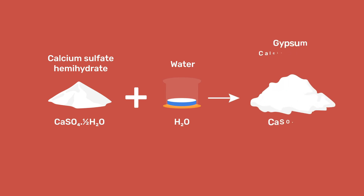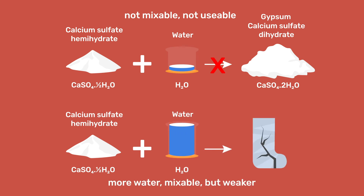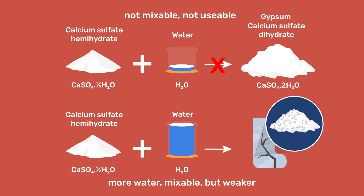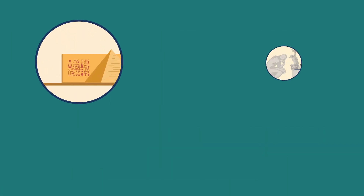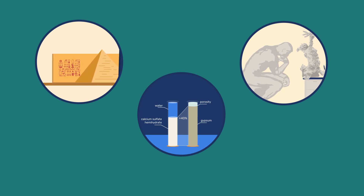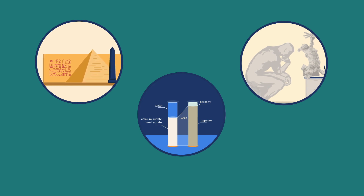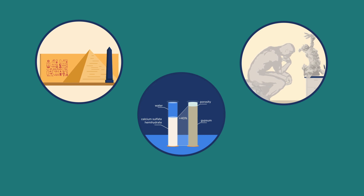The excess water has particularly negative effects on strength and durability. In short, by adding more water, the porosity increases and the strength decreases. In conclusion, the setting and hardening of gypsum is due to a chemical reaction, and not to drying, as is by contrast the case for earthen materials. This chemical reaction involves the coupling of gypsum precipitation with plaster dissolution, consuming liquid water and increasing the volume of solids. Strength is developed thanks to this reaction, but its value is also conditioned by the amount of excess water used. For further information on gypsum chemistry, please check the corresponding video.